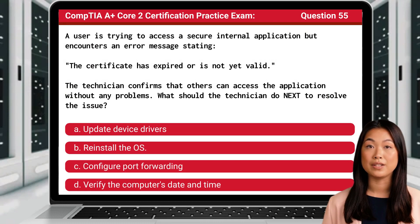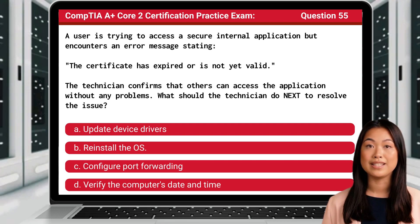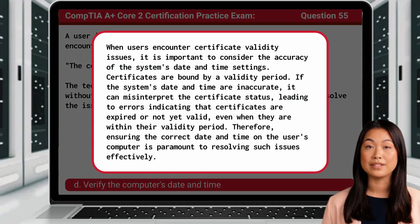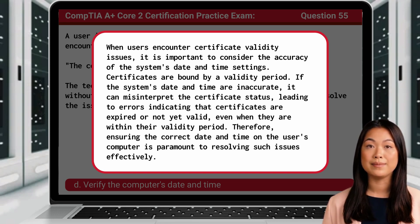Question 55: A user is trying to access a secure internal application but encounters an error message stating the certificate has expired or is not yet valid. The technician confirms that others can access the application without any problems. What should the technician do next to resolve the issue? The answer is D: verify the computer's date and time. When users encounter certificate validity issues, it is important to consider the accuracy of the system's date and time settings. Certificates are bound by a validity period; if the system's date and time are inaccurate, it can misinterpret the certificate status, leading to errors indicating that certificates are expired or not yet valid even when they are within their validity period. Therefore, ensuring the correct date and time on the user's computer is paramount to resolving such issues effectively.